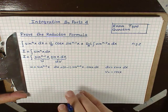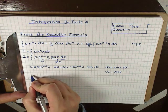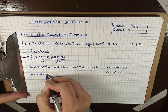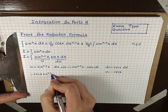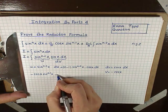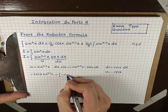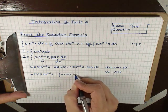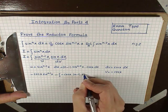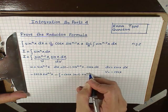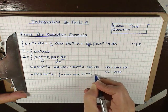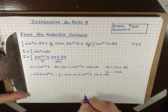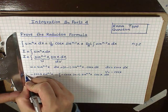Now let's apply the integration by parts formula. u times v gives us -cos(x) sin^(n-1)(x), minus the integral of v times du, which is negative cos(x) times (n-1) sin^(n-2)(x) cos(x) dx. This equals I.